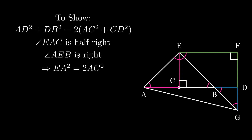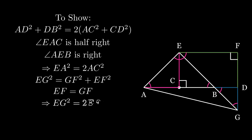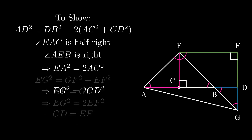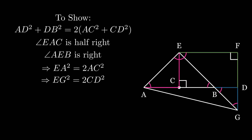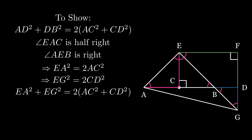Taking a look at triangle EGF, we see that EG squared is equal to GF squared plus EF squared. EF is equal to GF, so EG squared is equal to 2 times EF squared. But notice that we have a parallelogram ECDF, therefore CD is equal to EF, so EG squared is equal to twice CD squared. If we add both of these relations together, we find that EA squared plus EG squared will equal twice AC squared plus twice CD squared.